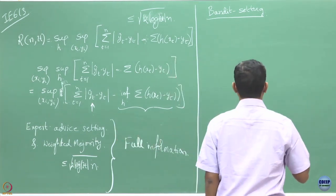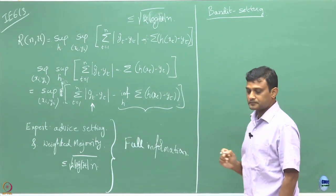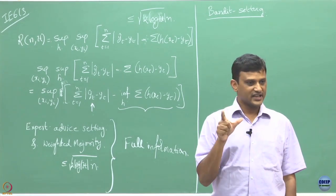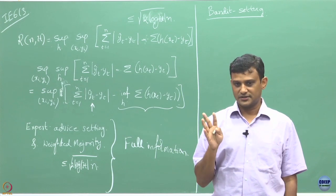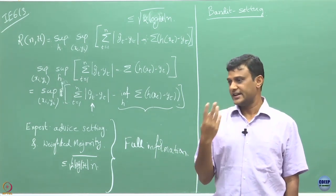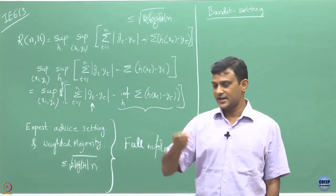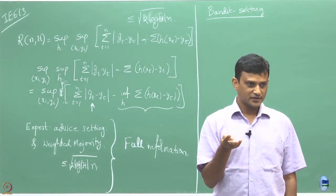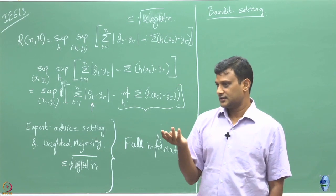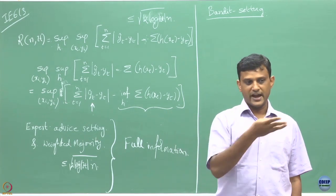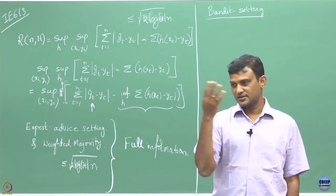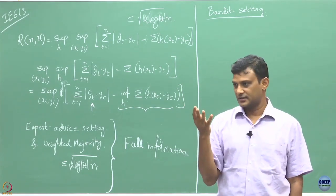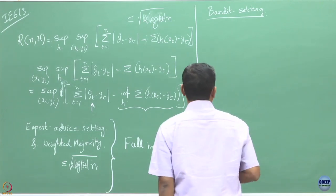So far the setup assumed that we somehow get to observe the losses incurred by all the actions. Henceforth, I will restrict that: I will get to see losses of only the actions I play, not about others. Because getting more information is always costly — in the road example you need a radio, and in the share market you may have to go to newspapers or web portals to get details about the other options.